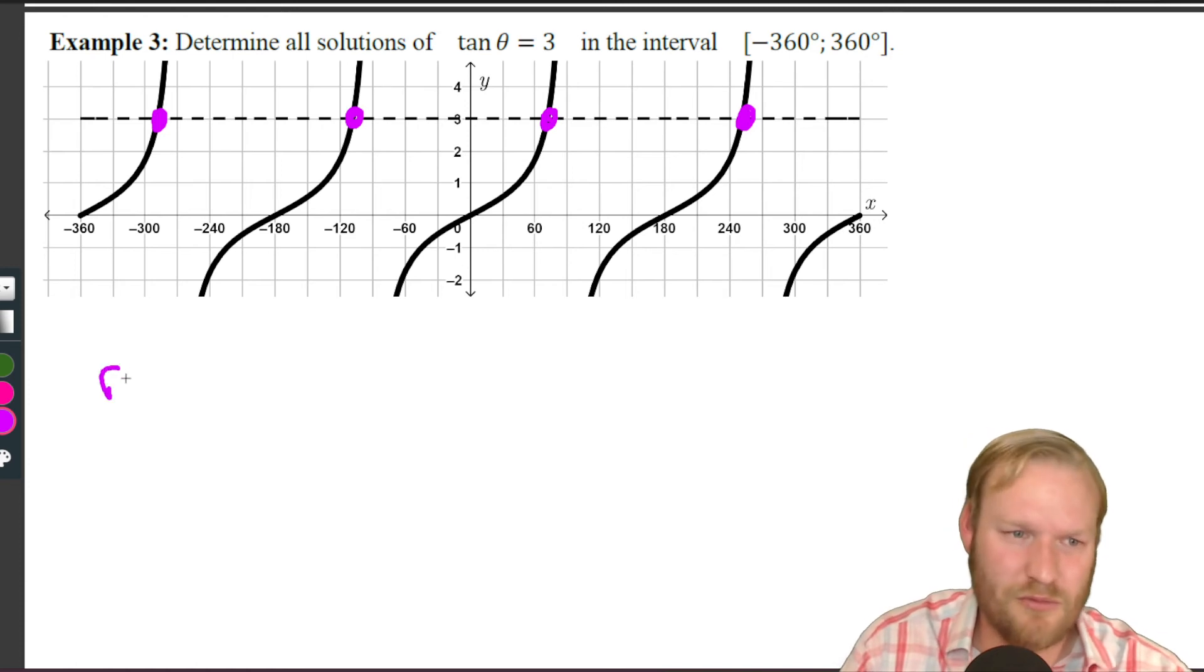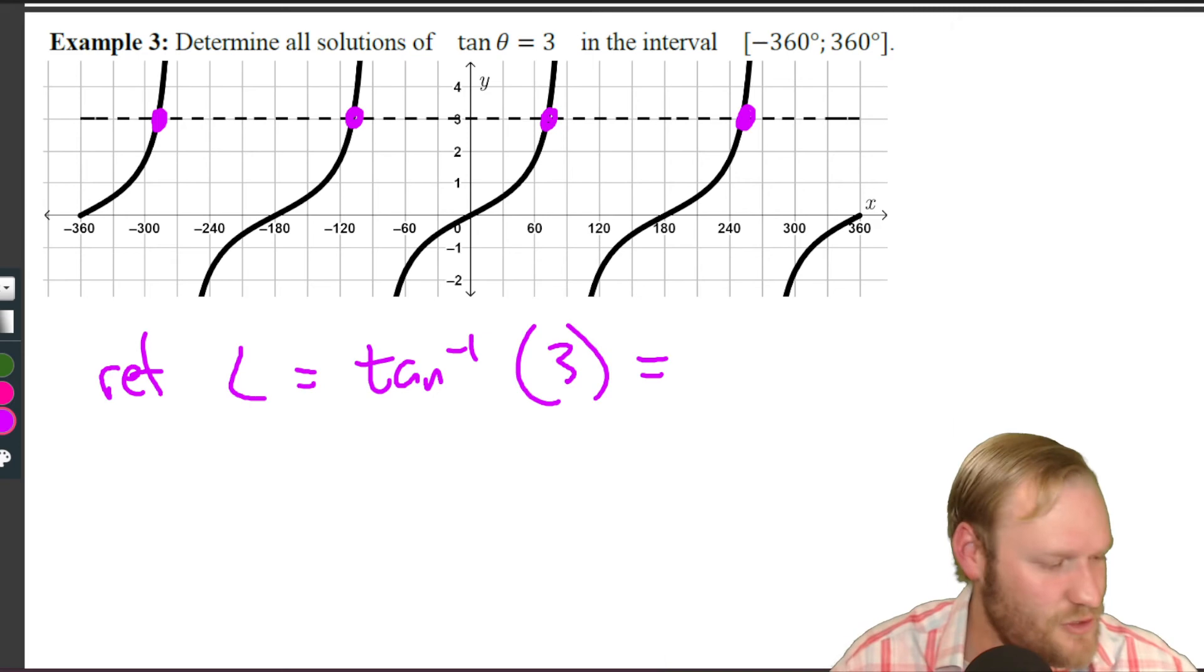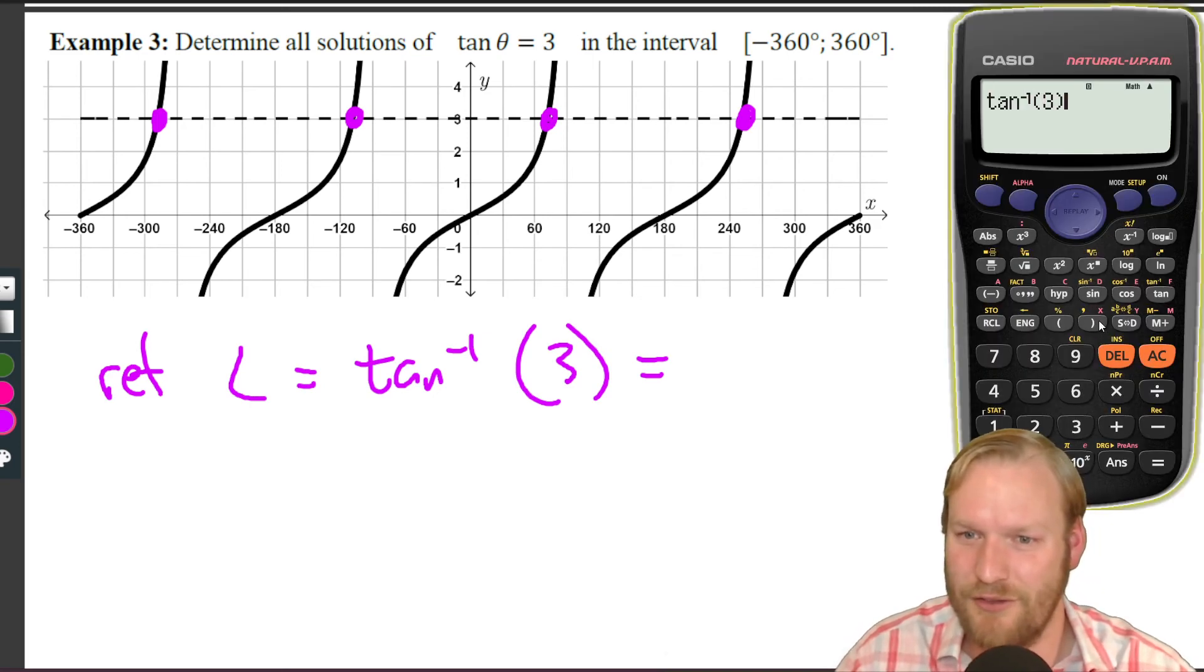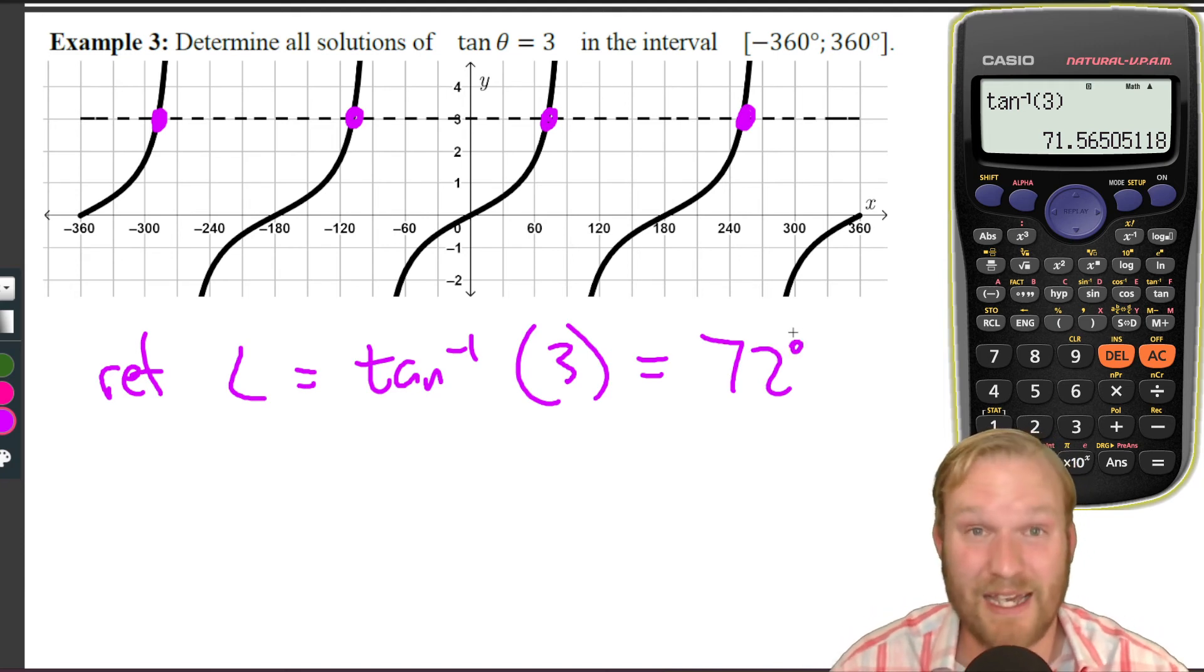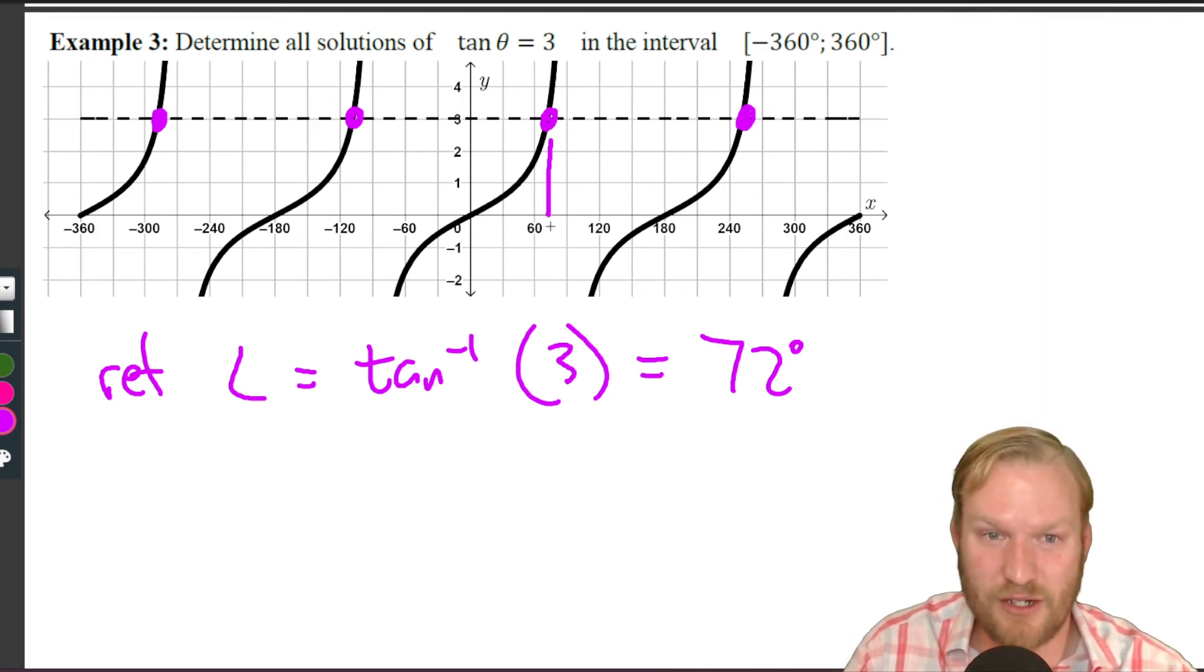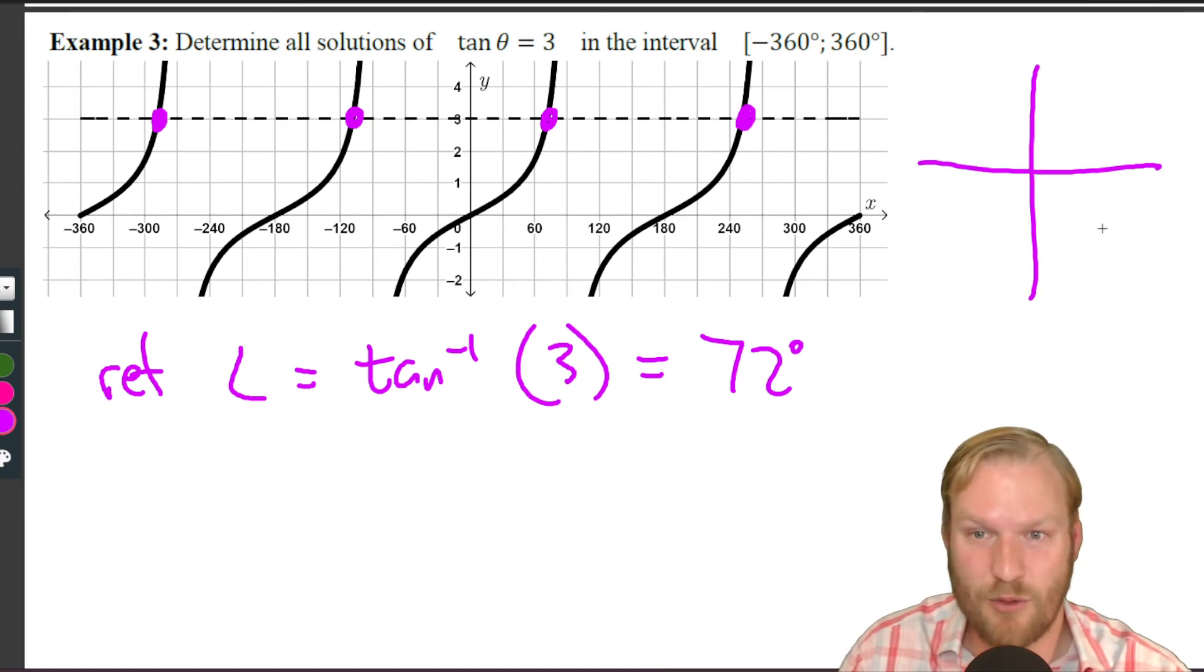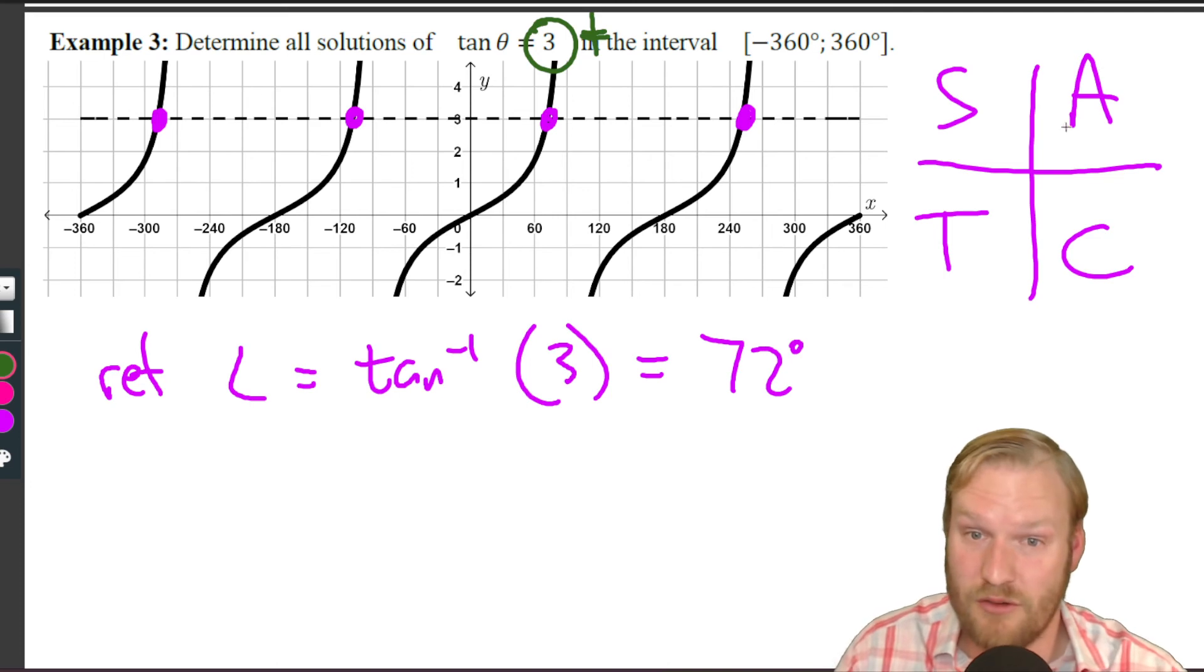Reference angle equals shift tan of three. We get the calculator out because there's no way we know offhand what that is. So shift tan of three, and we get 71.56. I'm going to go for 72 just so that I think it's just easier to work with no decimal places. So 72 degrees. Now 72 degrees does look like it's one of our answers. Let's just check. Most of the time we won't have the graph, so we'll just use our CAST diagram. We're given that tan is three, which is positive, so which quadrants are we in? We're in this part here, all, and we're in this quadrant over here where tan is positive.